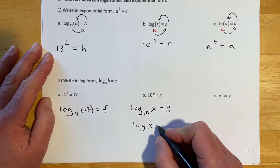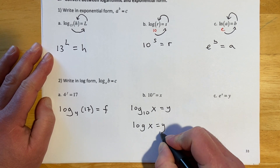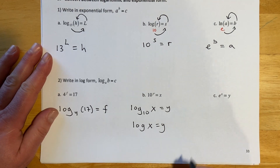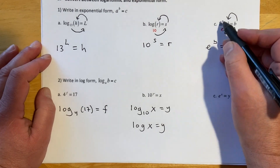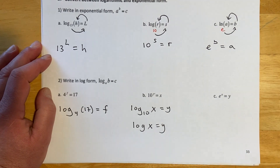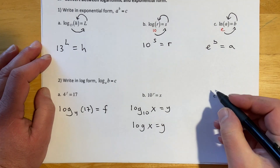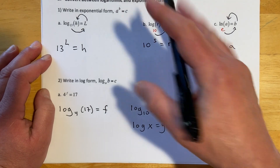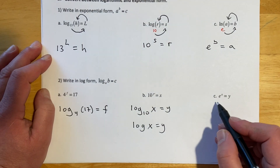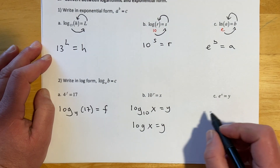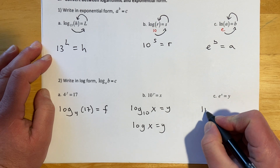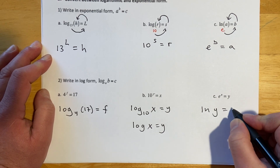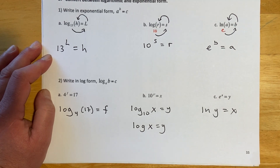Or I can just write log(x) using common log notation since I don't need to write the 10. For e^x = y, we use natural log: ln(y) = x, since log base e we basically never write out.